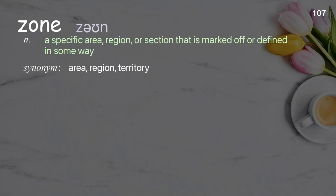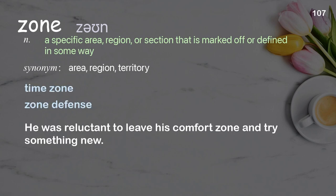Zone. A specific area, region, or section that is marked off or defined in some way. Examples: time zone, zone defense. He was reluctant to leave his comfort zone and try something new.